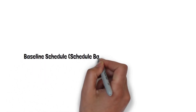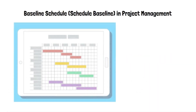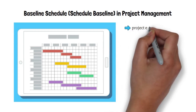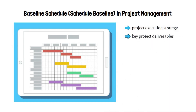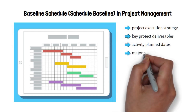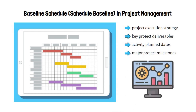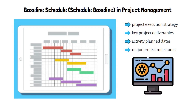A baseline schedule is a main project management document that should be created before the project starts. It demonstrates the project execution strategy, key project deliverables, activity plan dates, and major project milestones, as well as providing you with the ability to monitor and track how a change in one activity affects the whole schedule.